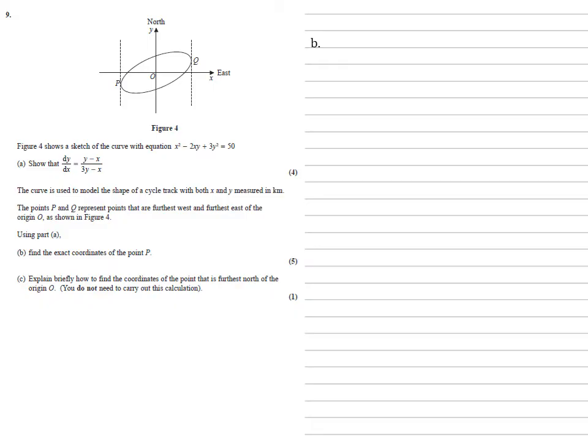For part b we need to find the exact coordinates of point P on the diagram. Looking at P, we can see the gradient is completely vertical, so the gradient as we approach P is heading towards infinity. We've got our equation for the gradient which is y minus x over 3y minus x. To get a fraction heading towards infinity we can set the bottom equal to 0, so 3y minus x equals 0.